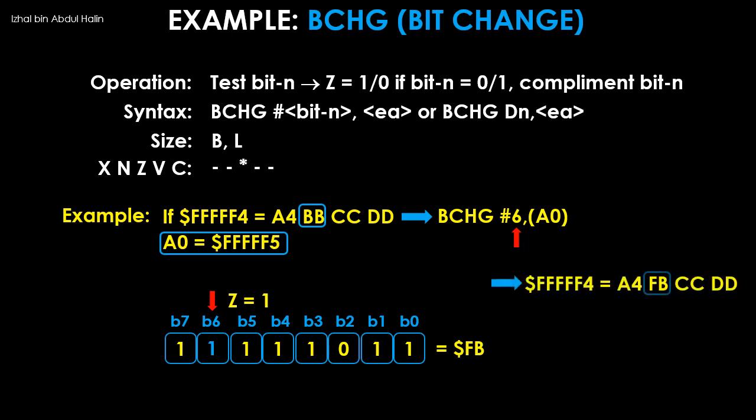After this, the value in bit 6 is changed to 1. The hexadecimal equivalent of the data now is FB. This data is written back into address FFF5. At the end of the execution, the status register's value reflects that only the Z flag has changed to 1.